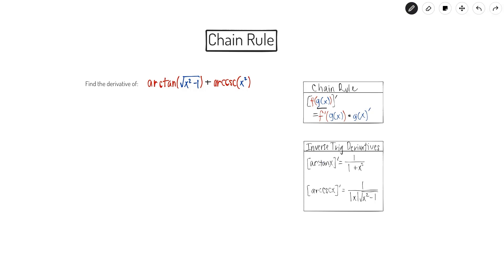I color-coded the inner function and all of its associated parts in blue. The outer function and all of its associated parts are color-coded in red. The same color coding is used over here, as we see we have functions composed within other functions.